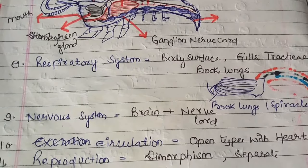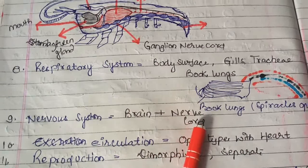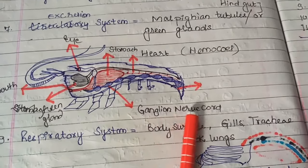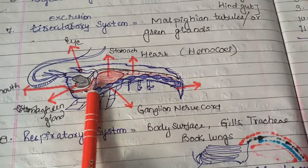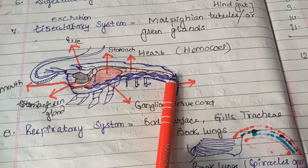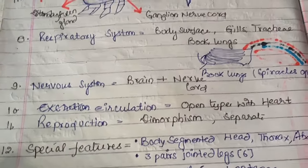Regarding the nervous system, there are brain and nerve cords. As shown here, there are ganglion nerve cords, which are bunches of nerves that help in signal transmission.